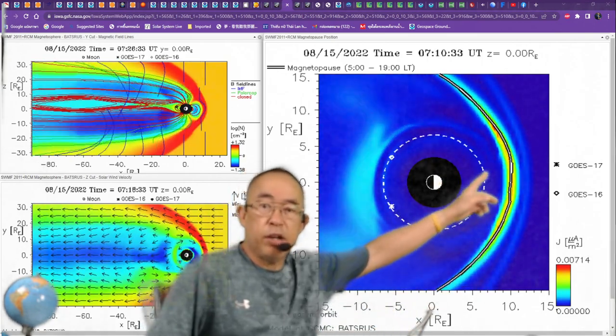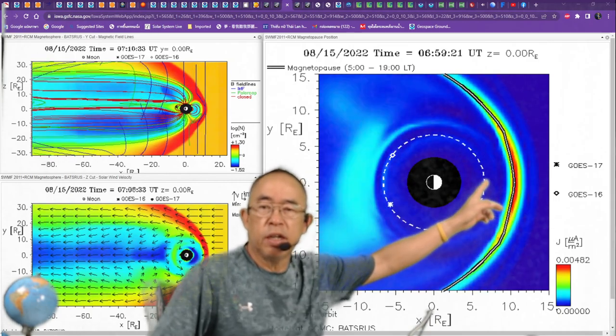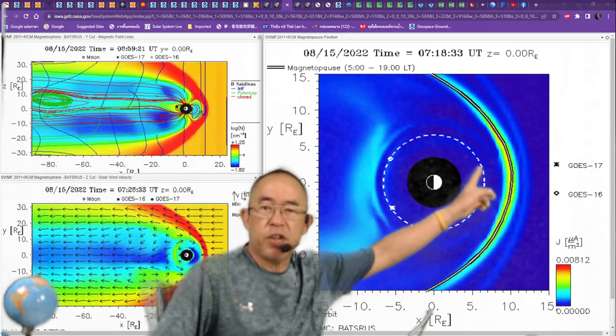You can see that the Van Allen belt is not really close to the right orbit, but the shape, you can do that.